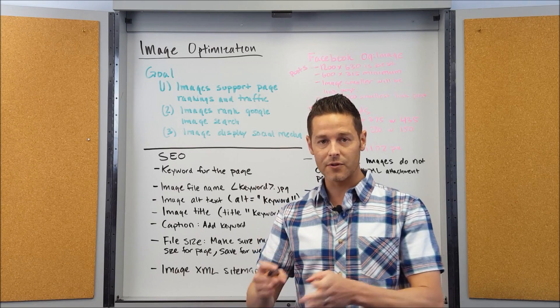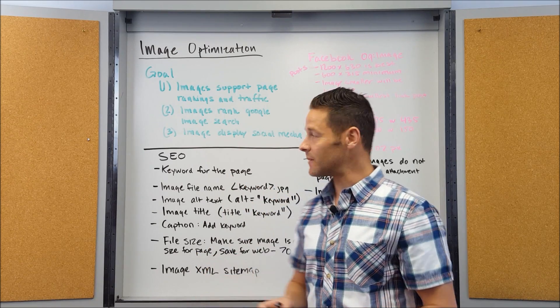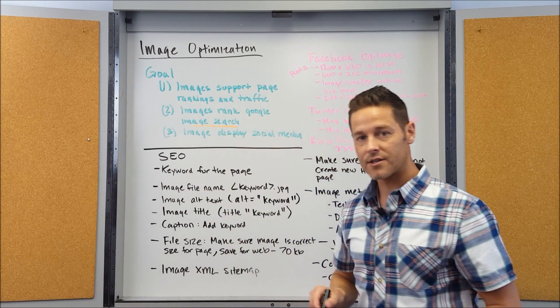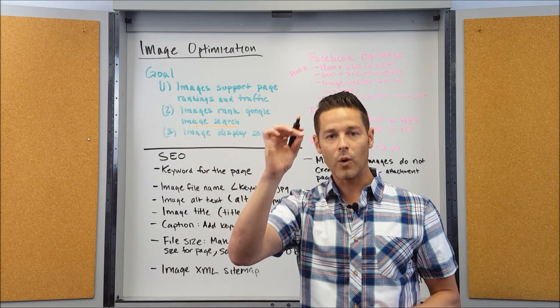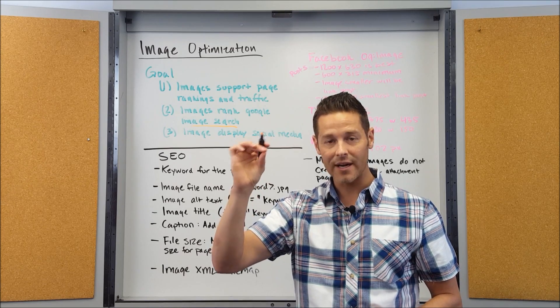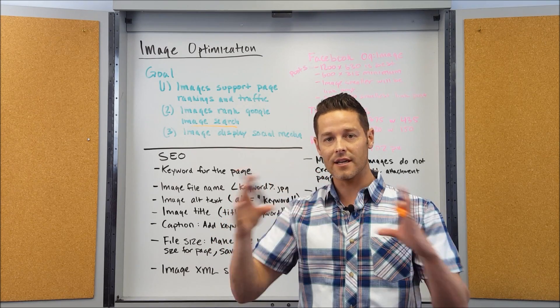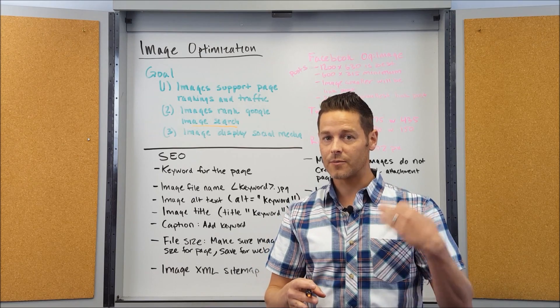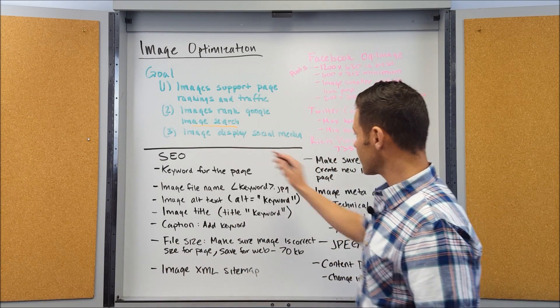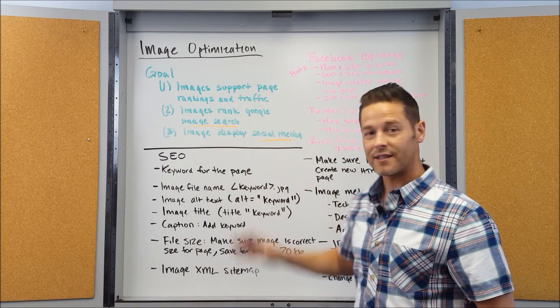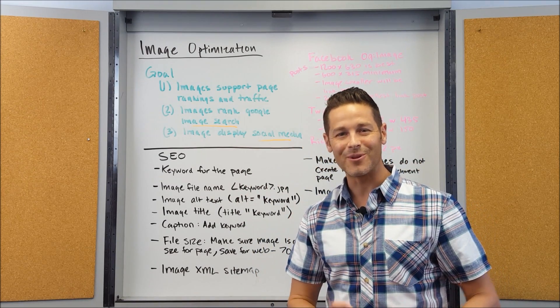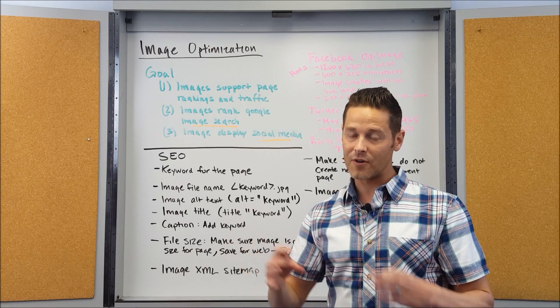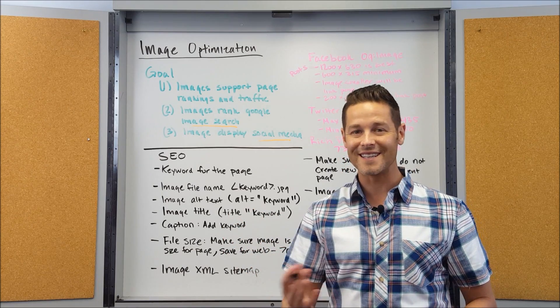Individual rankings inside of Google are influenced by how the images on the page are optimized. Goal two: how the images rank in Google image search. Within Google there's web, image, video tabs, and when you click on image you'll see all those great images pulled from people's websites. We want to make sure our images show up in image search so people click on that and come to our website. And third, so that our images display correctly in social media: Twitter, Facebook, Pinterest. All of these important sites for driving referring site traffic need to have images optimized correctly.